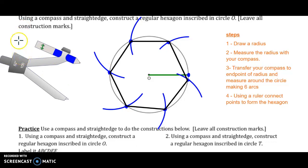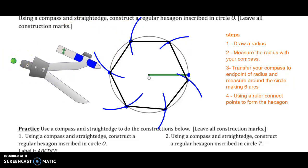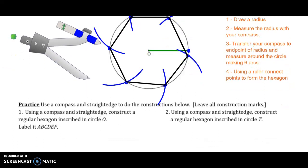So steps: draw a radius, measure the radius. You can use the end point of the radius, or you can start pretty much anywhere on the circle, as long as you end up with six places of intersection of the circle and the arcs.